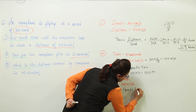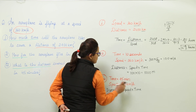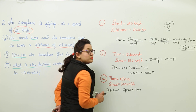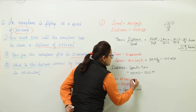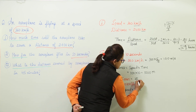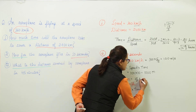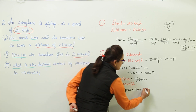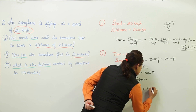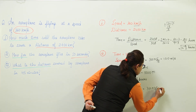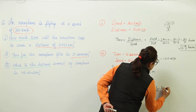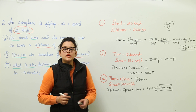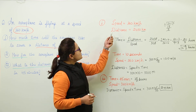Before substituting, we check the values. The time is in minutes while the speed is in kilometers per hour — units are different. So we convert 45 minutes to hours by dividing by 60, giving 45/60 hours. Now both units match. Substituting: 360 multiplied by 45/60 gives 270 kilometers. So 270 kilometers is the distance traveled by the aeroplane in 45 minutes.